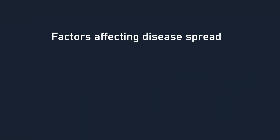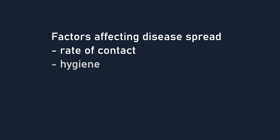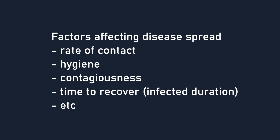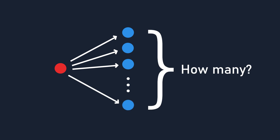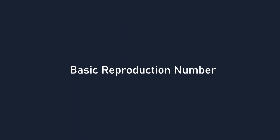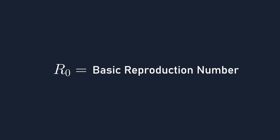Now, there are way too many variables that determine how much the disease spreads, like rate of contact, hygiene, how contagious the disease is, and how long it takes for people to recover. But for the purposes of modelling the population, we can ignore all these different variables and only measure one metric that ultimately gives us the most important information we need to know: how many other people does each infected person pass the disease to during the duration that they were infected?